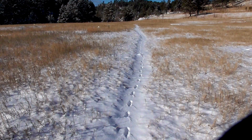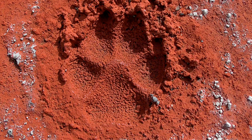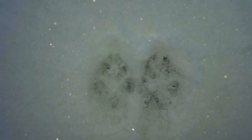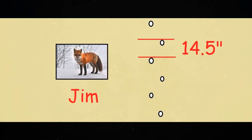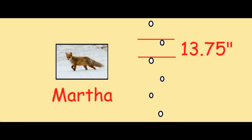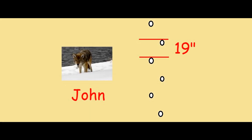Now let's see how this works with a fox. When you are measuring the stride of a canine, do not count the nails. Always measure from one toe to the next toe because the nail length constantly changes according to what type of terrain that animal walks on. In this example, Jim the fox has a 14.5-inch stride. We know that Jim is slightly larger than Martha because Martha has a 13.75-inch stride. Here we have Jack the coyote with a 21-inch stride, and we know that he is larger than John because John only has a 19-inch stride.